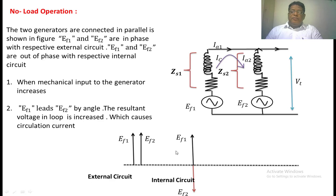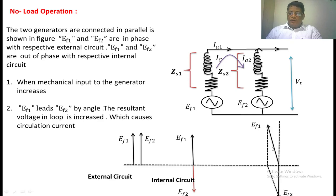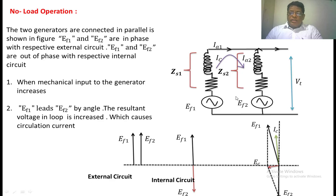If you increase the mechanical input of generator 1, then EF1 leads EF2. That is shown here — this is EF2, this is EF1. If you find the vector difference of the two phasors by means of the parallelogram law, the resulting voltage is the circulating voltage.